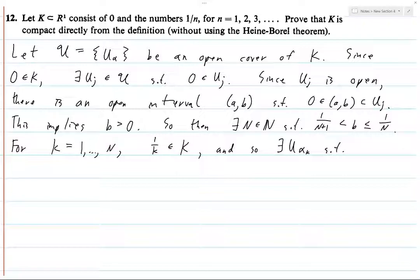And so just to be safe, for each K, I'm just going to call it alpha K. There is some U alpha K in fancy U, such that 1 over K is contained in this U alpha K.